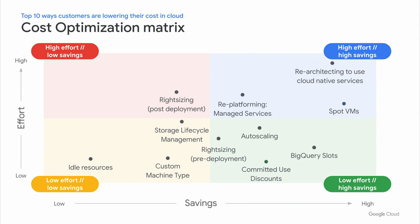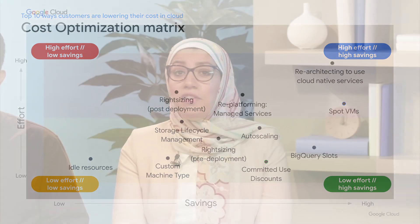Depending upon the use case, some strategies are going to provide highest value with minimal effort — think about purchasing flexible committed use discounts or the regular committed use discounts, and reserving BigQuery slots, similar to what you've been doing at General Mills. There are other strategies that can be employed during the architecture and design phase — like auto-scaling and choosing custom VMs to right-size your machines based on your workload requirements. Other strategies work great if you are into automation, like turning off idle resources, right-sizing your VMs post-deployment, and setting up appropriate storage lifecycle management policies.